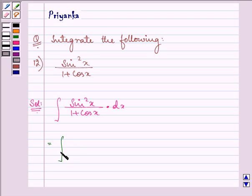Now we can write sin²x as 1-cos²x, right? And we have in the denominator 1+cosx dx.